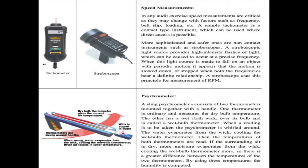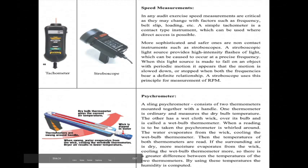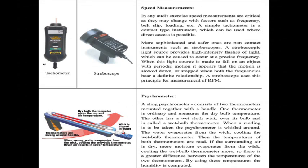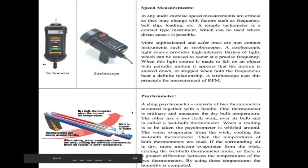Next is speed measurement using a tachometer — available as contact type and non-contact type. The non-contact type is a stroboscope, which uses light frequency for speed measurement.